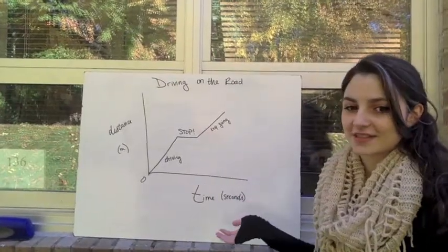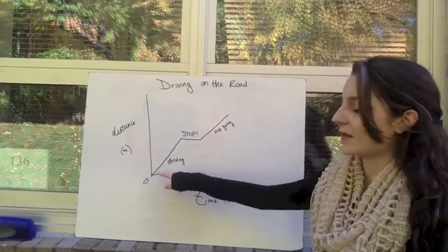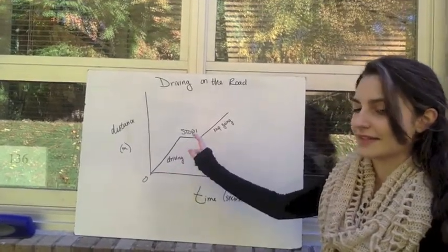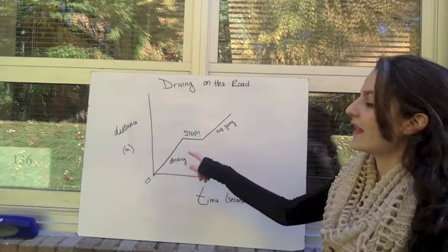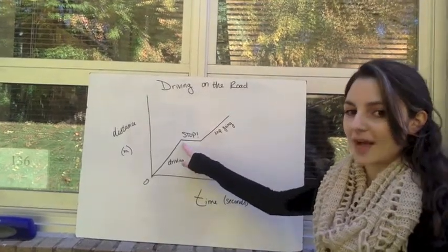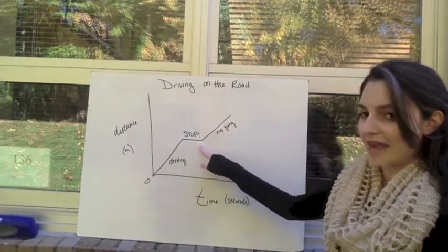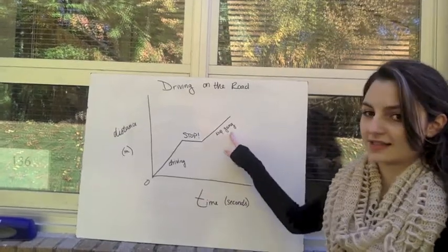Take a look at this distance versus time graph. You can tell that the car is going in a straight line, so it's at a constant speed. And then we see something, so we stop for a period of time, and then we'll keep going at a constant speed again.